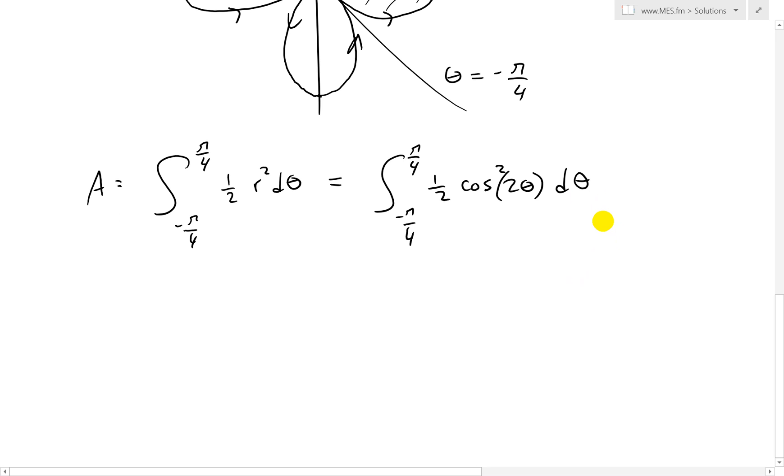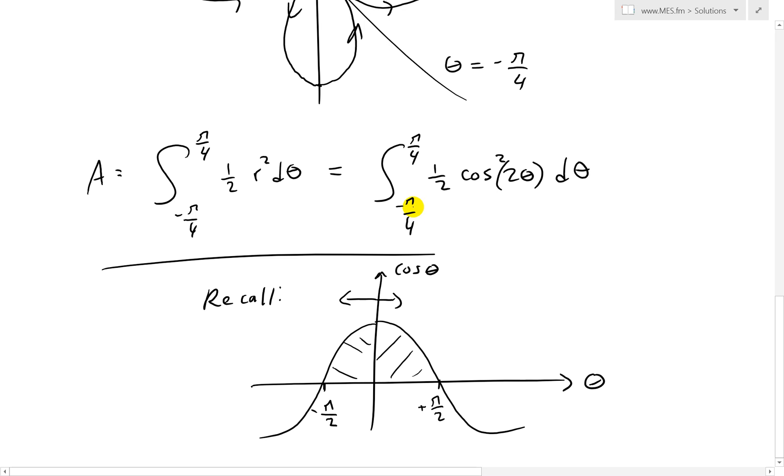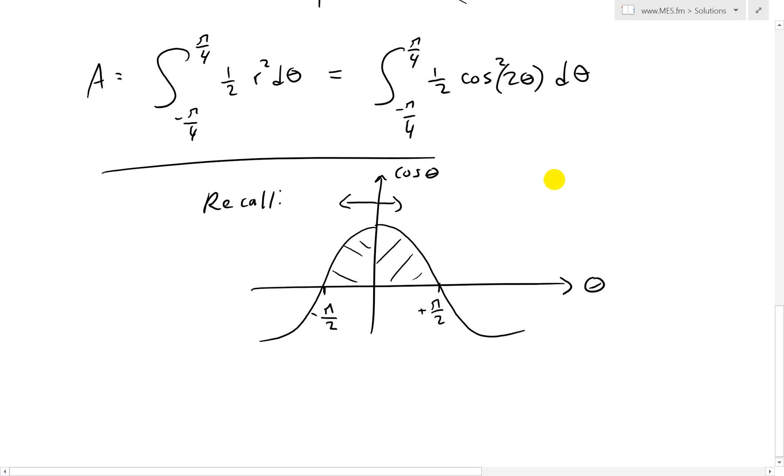And recall that the cosine curve is symmetric about this side across here. So that means if we go to the negative side, this is pi over 2 negative, this is pi over 2 positive. So this means that we could just use - well, you could simplify this range. We could go from 0 to pi over 4, and then put a multiplied by 2.